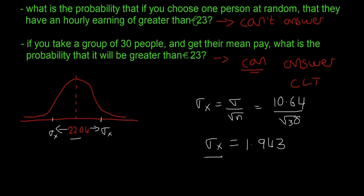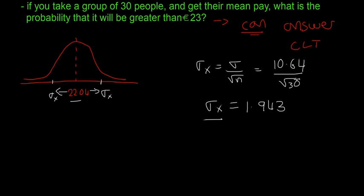What we're going to do is find the probability of X being less than 23 euro. For that, we need to find the z-score of 23.